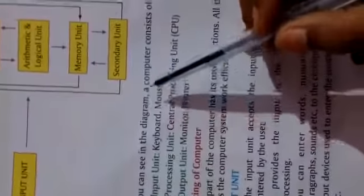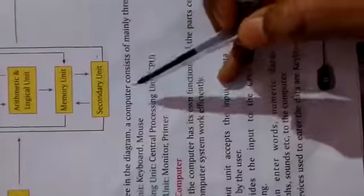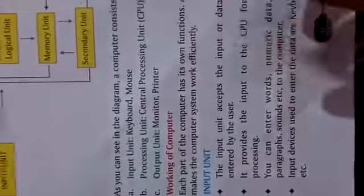As you can see in the diagram, ek computer consists of mainly three units. Input unit — keyboard aur mouse jaise saare input devices ke through kaam karta hai. Processing unit — CPU hota hai hamara main. Output unit — output devices ke through kaam karta hai, jaise monitor, printer, etc.